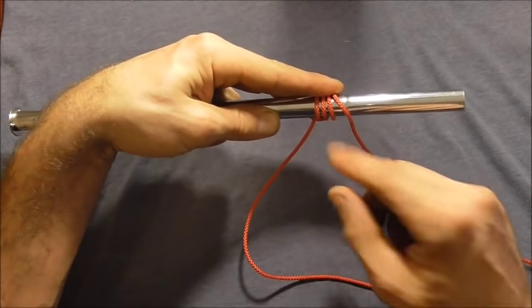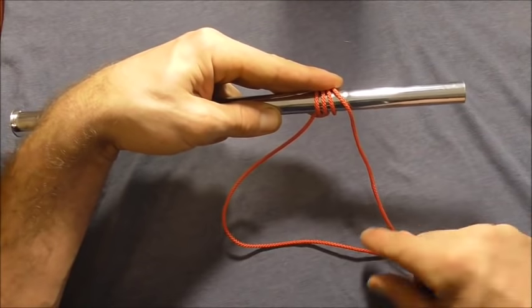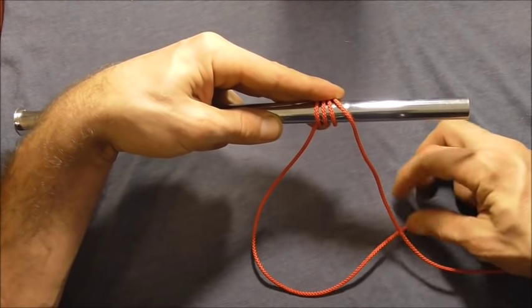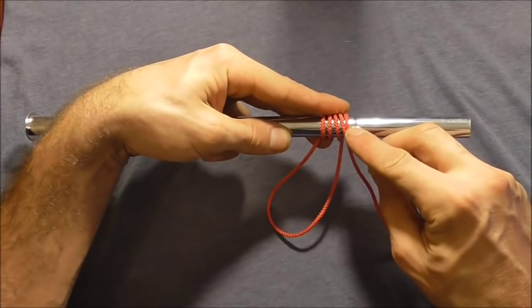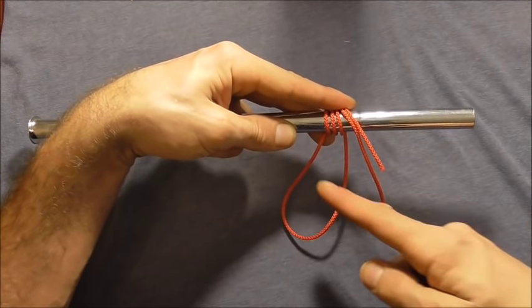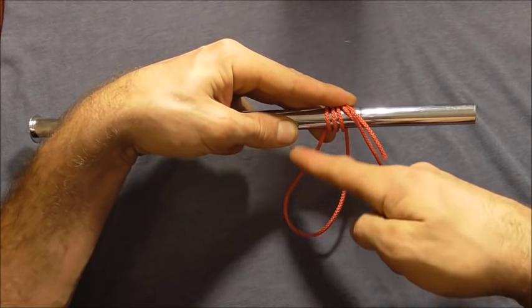I'm going to hold these in place and I want to take this tag end here underneath, back behind and around the rail and hold that into place there. It should form this loop down the bottom.